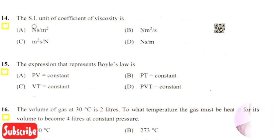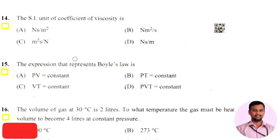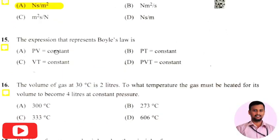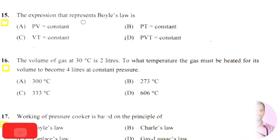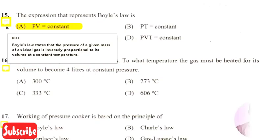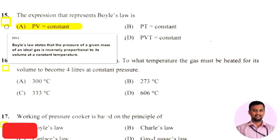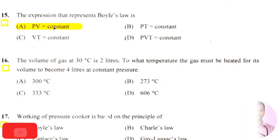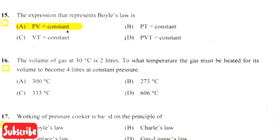The next question asks about the SI unit of coefficient of viscosity. Moving to the next question: Boyle's law — pV = constant. Boyle's law states that the pressure of a given mass of an ideal gas is inversely proportional to its volume at constant temperature, mathematically represented as pV = constant.